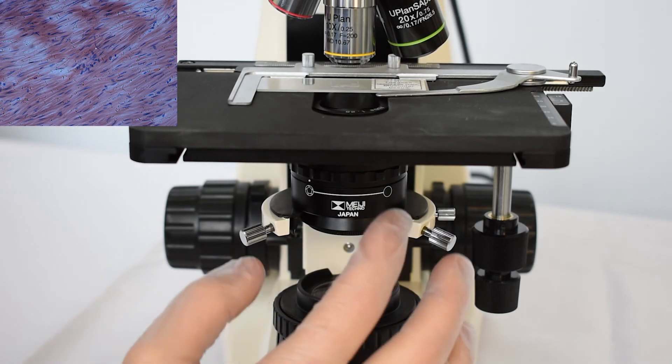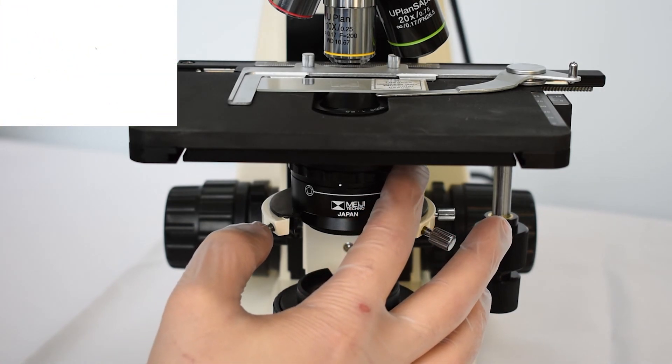Next, the condenser diaphragm should be opened. Finally, you can adjust the light intensity that is comfortable for the sample study.